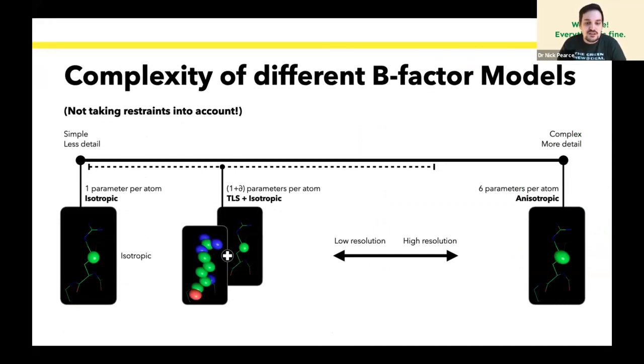To give an idea of the complexity of these models, the simplest model is that you use only isotropic B-factors, one parameter per atom. At the other end, at high resolution, we have a very complex model with six parameters per atom and an anisotropic description of every atom. Floating in the middle is another commonly used model of TLS plus isotropic, where people define a TLS group, say one per chain, to describe the anisotropic motion of that chain, and then on top of that, every atom gets its own B-factor.